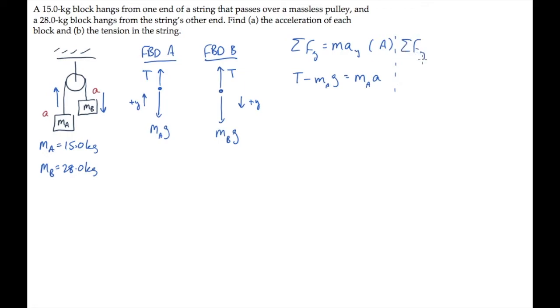Writing this again for mass B, we now have tension in the negative y direction, because y is positive in the downward direction for mass B. And weight is in the positive, and that equals mass of B times A.